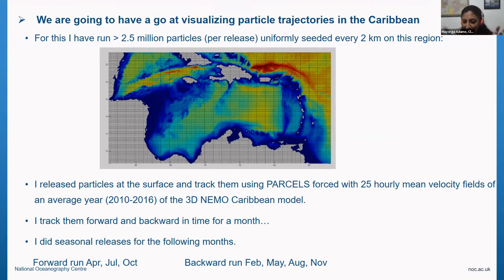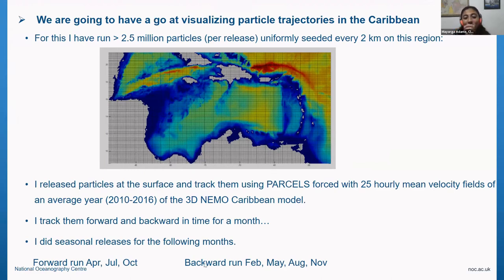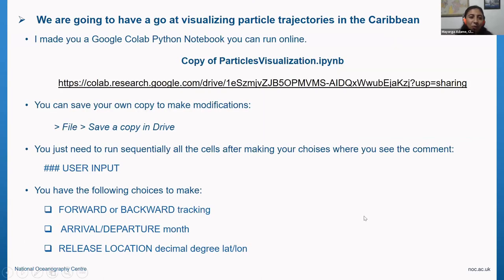I did seasonal releases for specific months. For the forward run, I did April, July, and October — January was attempted but doesn't currently work. For the backward run, I released in February, May, August, and November. These are the months you have to choose from in the notebook.